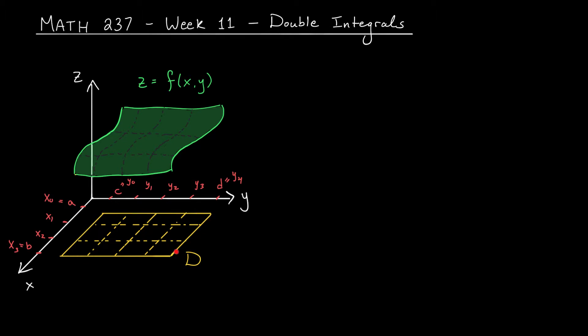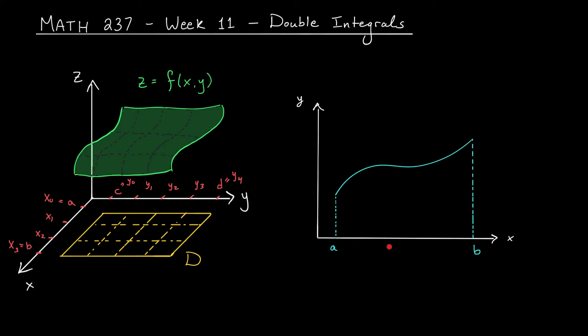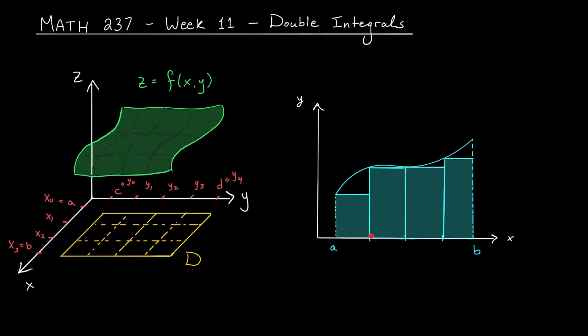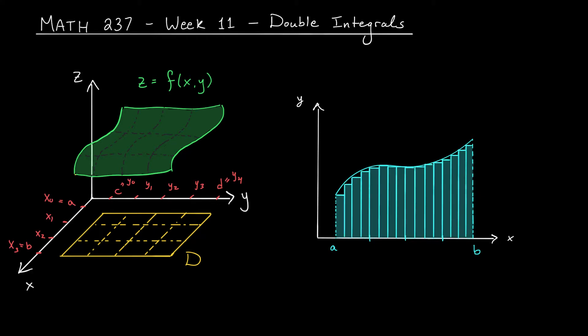Let's say that D is this rectangular region here. This reminds me of the problem of finding the area under a curve over a given interval — a problem from Calc 2. You probably sliced up the interval into a bunch of tiny pieces and used a rectangular area to approximate the area under your graph on each tiny sub-interval. You then added up these areas, and by letting the cuts get finer and finer, your approximation got better and better.